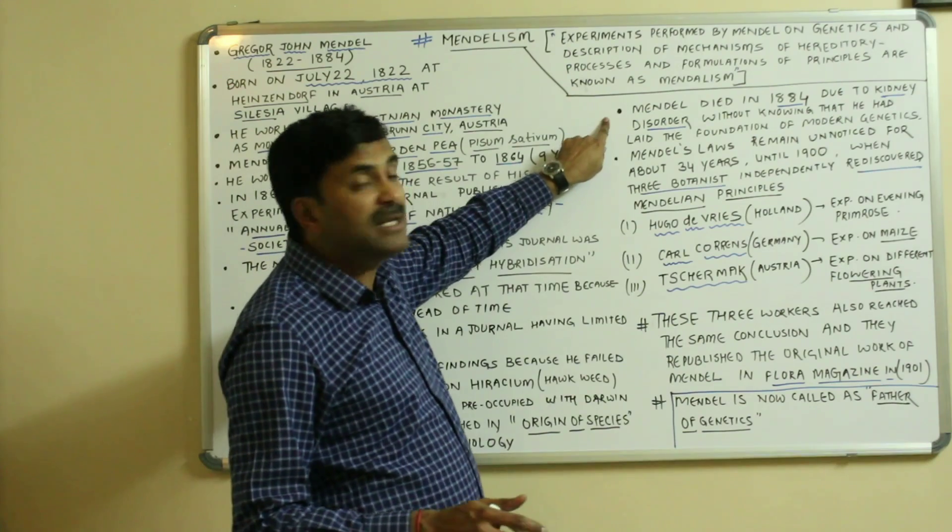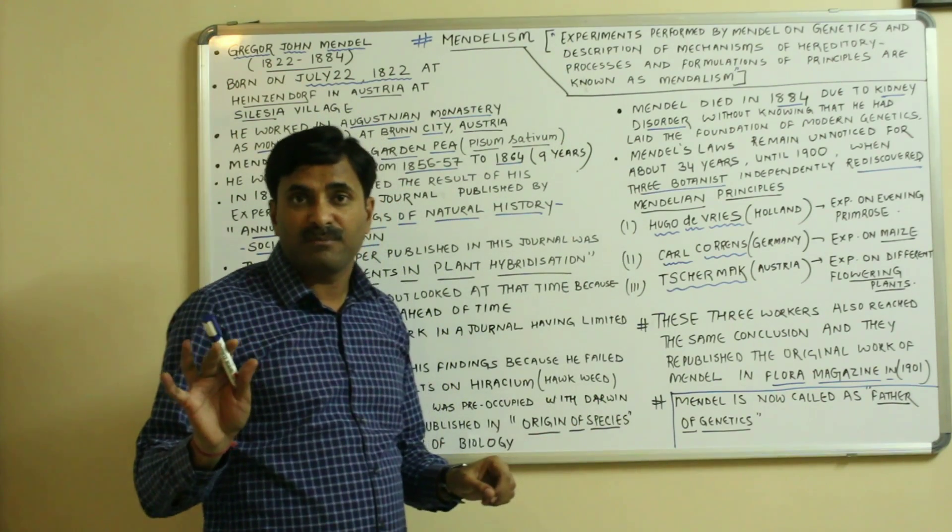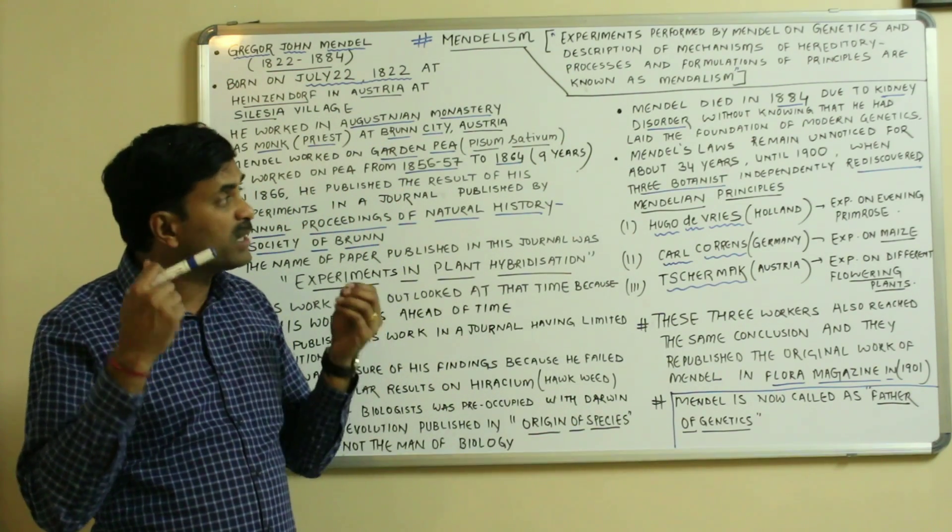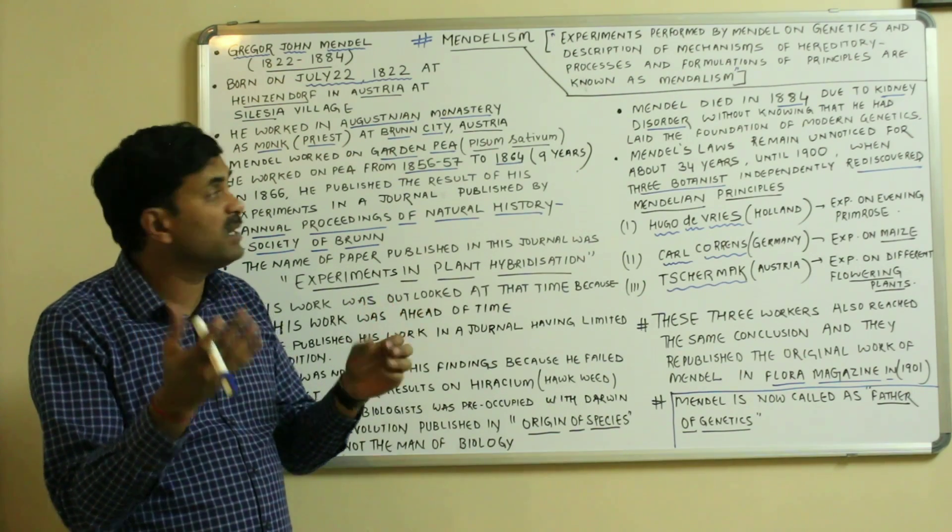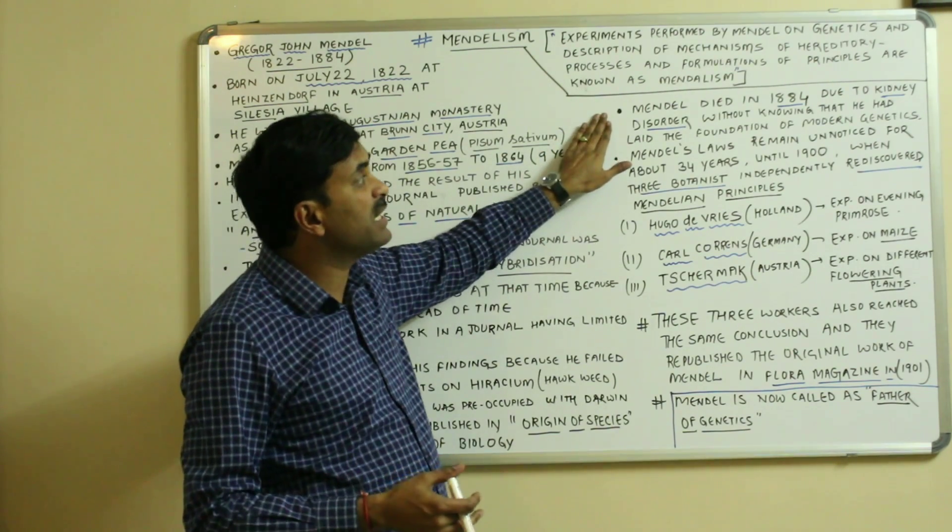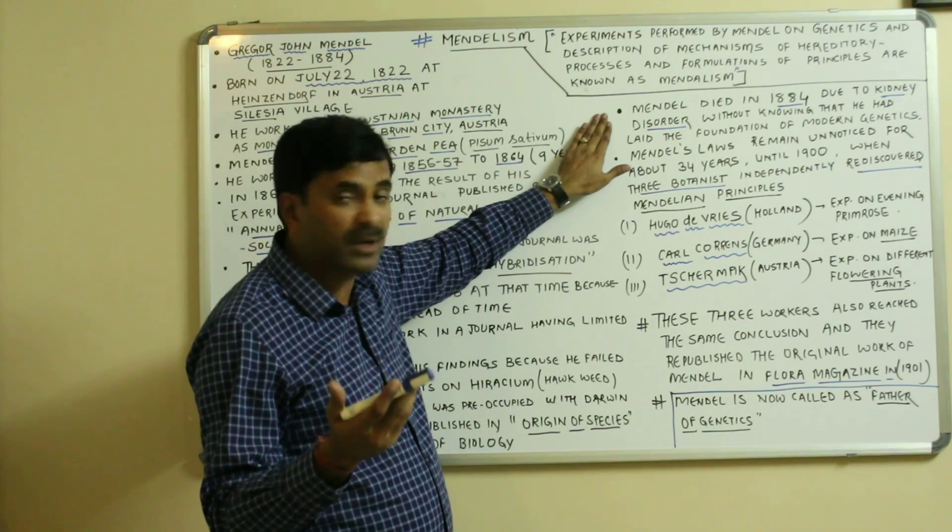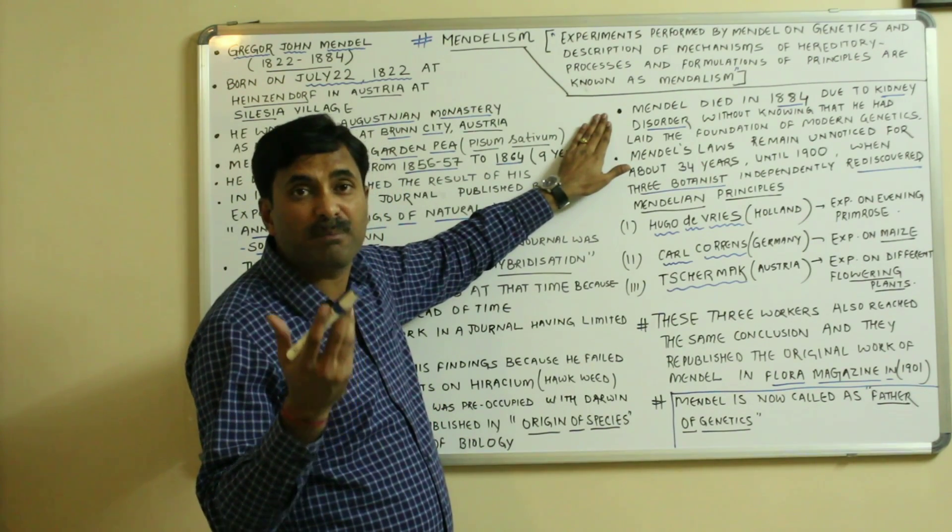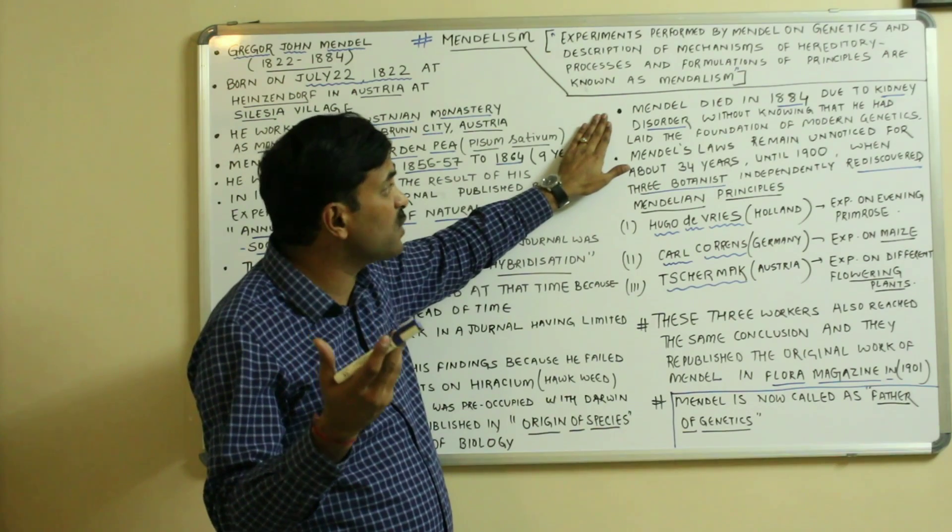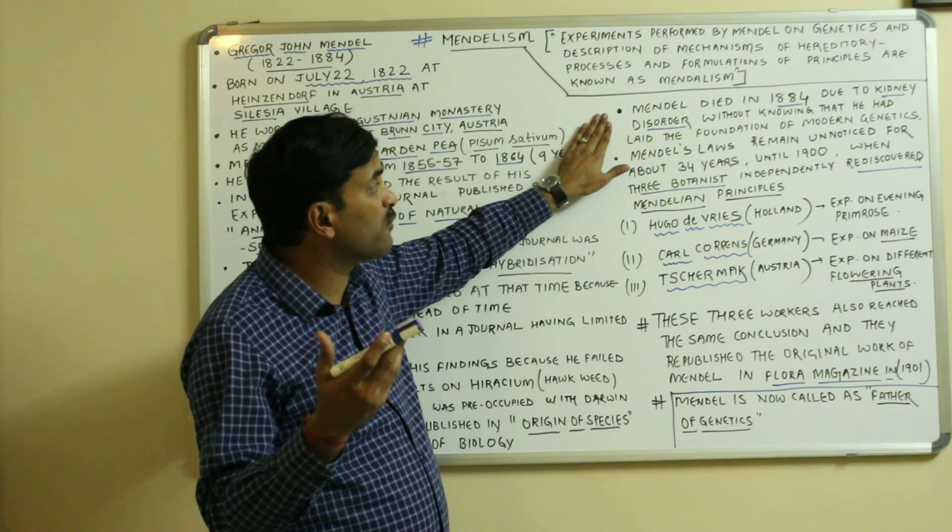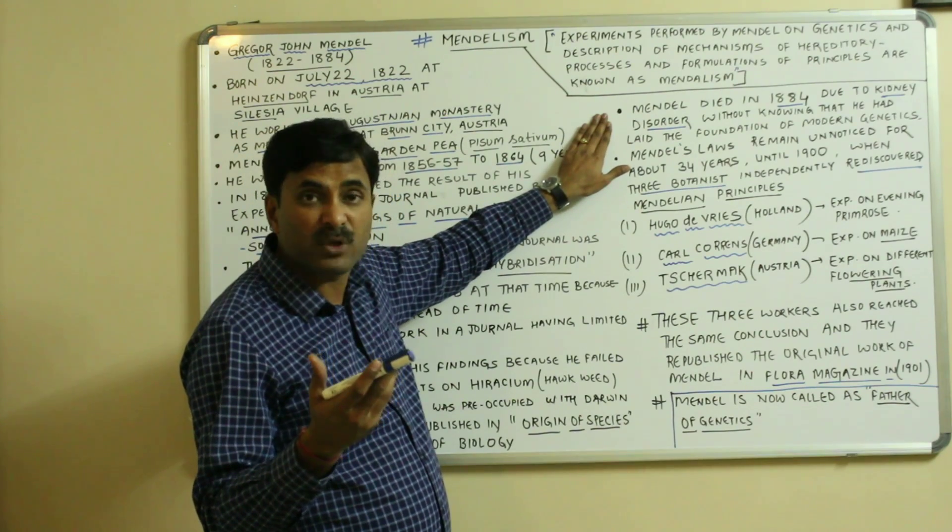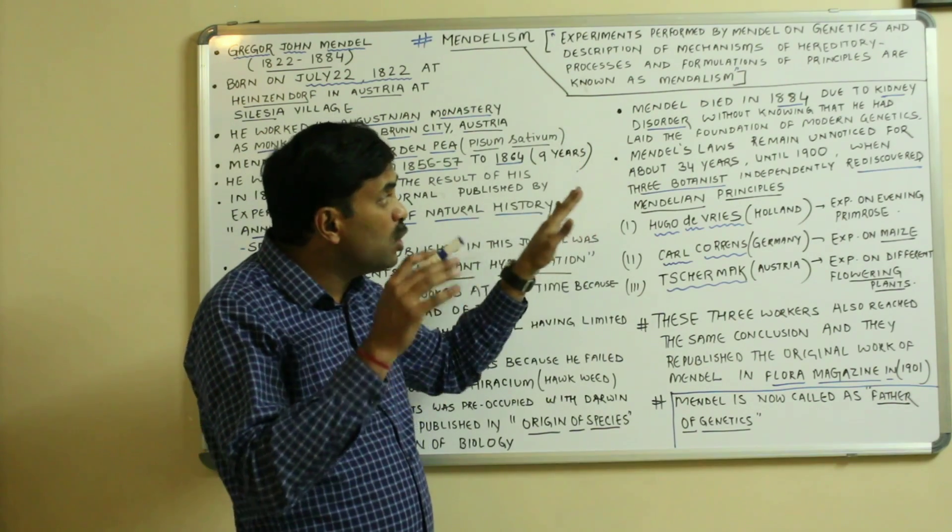Mendel died in the year 1884. Mendel was regularly working so that his work can be considered by someone, but in the year 1884 he died due to some kidney disorder. He was actually suffering from Bright's disease, which is a kidney disorder, without knowing that he has laid the foundation of modern genetics.